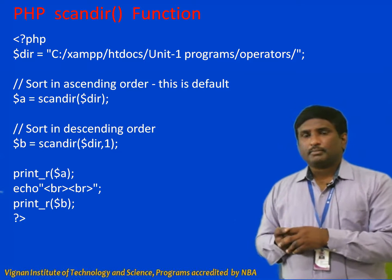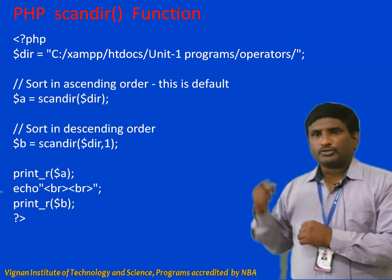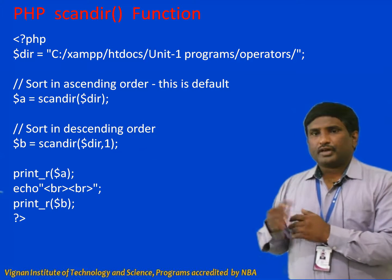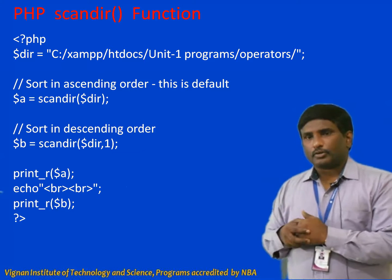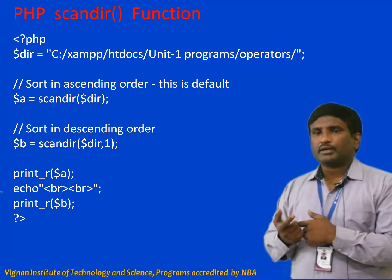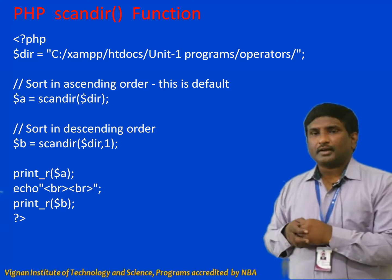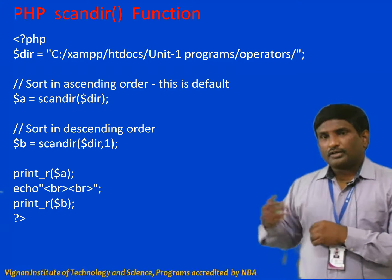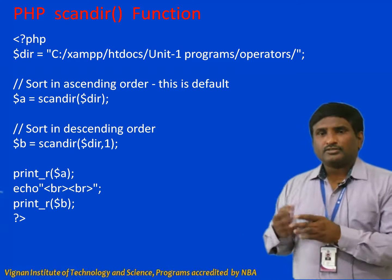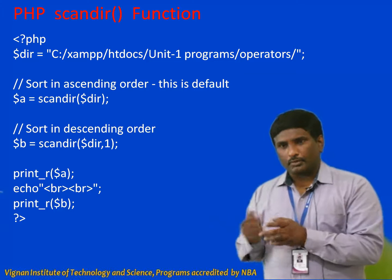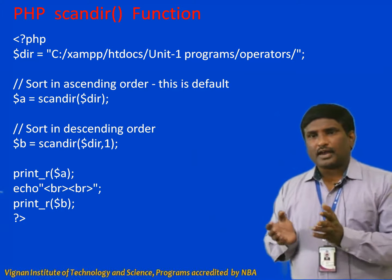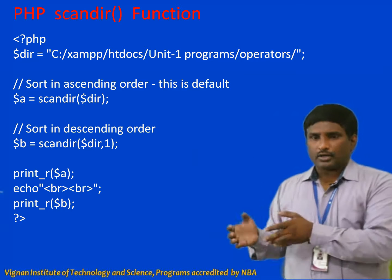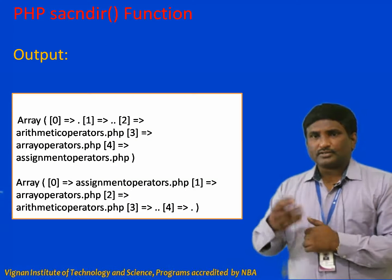In the program for scandir(), we specify the path of the directory to be scanned. The handle is passed to scandir(). Without a second argument, it defaults to ascending order. Then we pass 1 as the second argument to get descending order. print_r() is used to display the content on the browser — it scans the entire directory and displays files in ascending or descending or no particular order depending on the second argument.